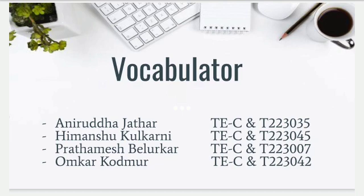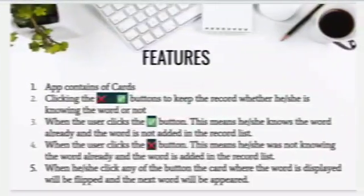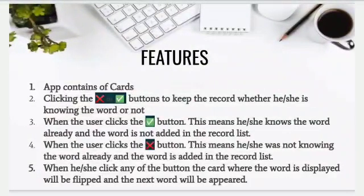The main objective of our project is to help the user in learning any language. The Vocabulator app is used to learn any language according to the user's needs. We have taken French language as an example for this project. Here are some of the features of our app.